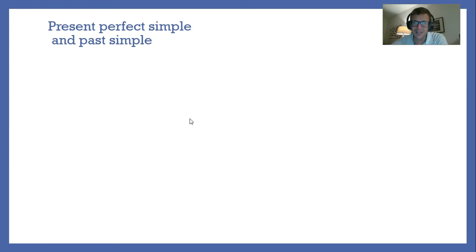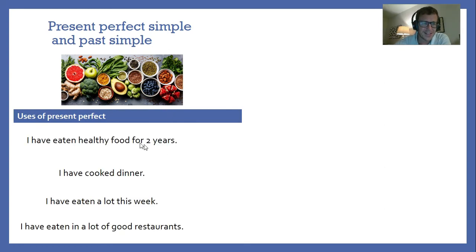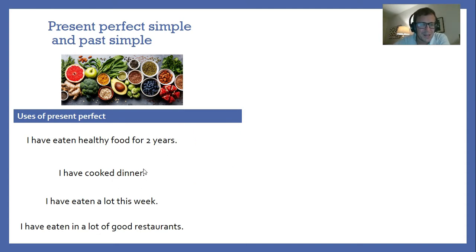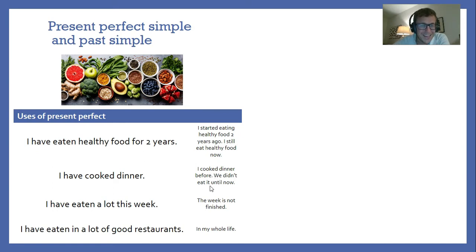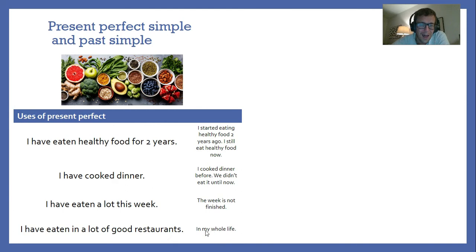A bit more to look at with present perfect versus past simple — let's move on to the subject of food. Uses of the present perfect: 'I have eaten healthy food for two years' means I started eating healthy food two years ago and I still eat it now. 'I have cooked dinner' means something a bit different — I cooked dinner but we haven't eaten it yet. 'I've eaten a lot this week' — the week is not finished. And 'I've eaten at a lot of good restaurants' — this is just an experience, something you've done in your whole life.